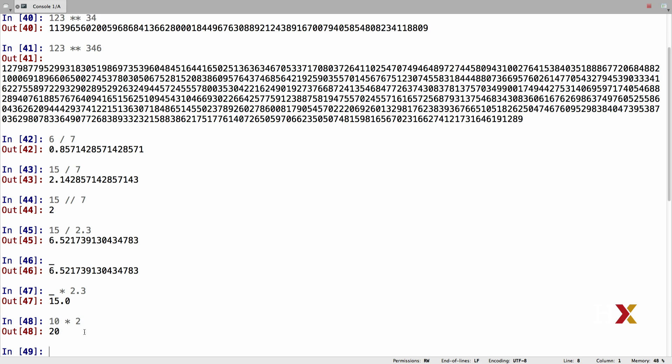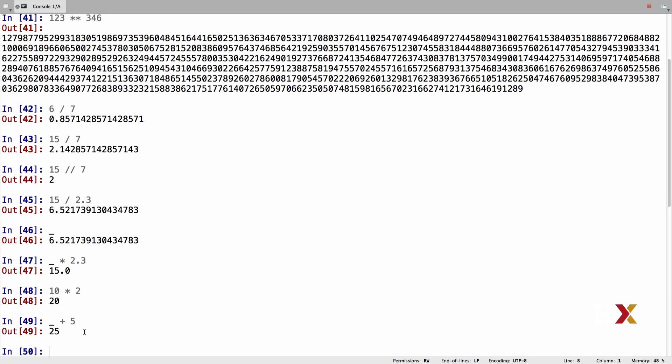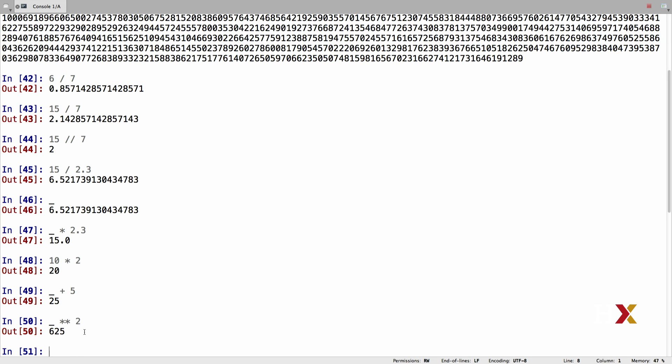This is especially handy in the interactive mode if you'd like to chain a few calculations. So let's try one example. Let's first start with 10 times 2. That's 20. Let's take that number, let's add 5 to it. And let's then take that number, 25, and raise that to the second power. In this case, the answer is 625.